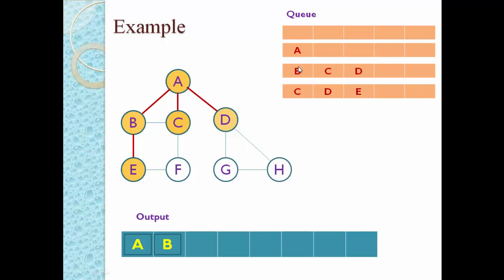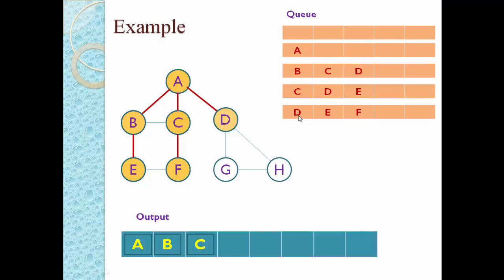Perform dequeue: C is deleted and printed as output. Explore C — its neighbors are B and F. B is already visited, so we store only F in the queue. The queue now has D, E, and F. Perform dequeue: D is deleted and printed as output.